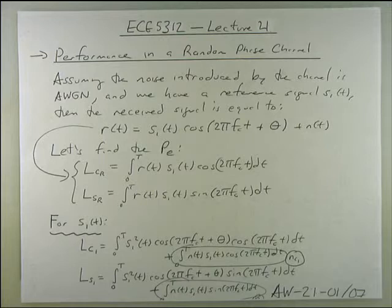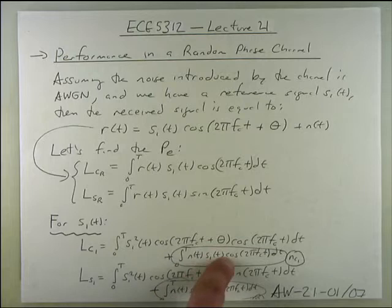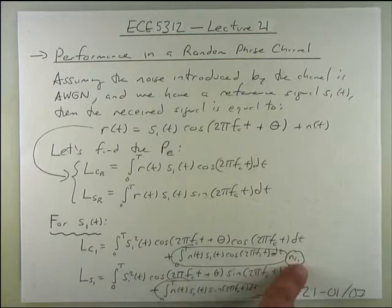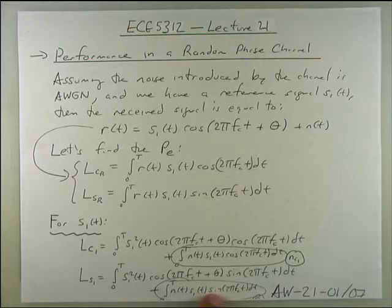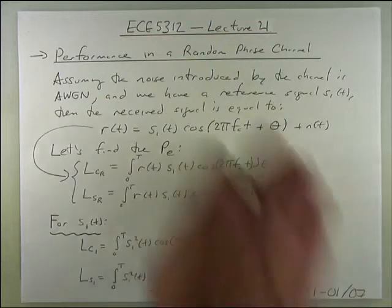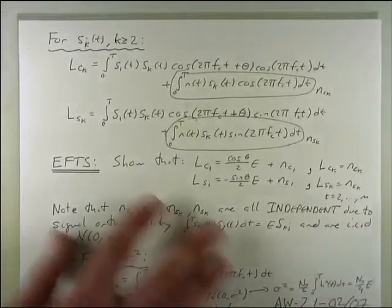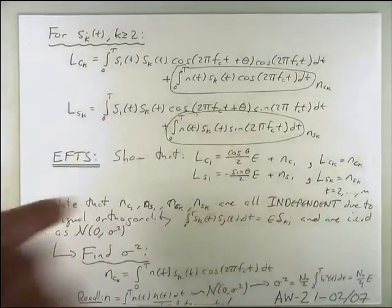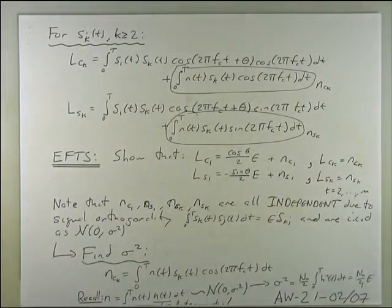The first simplification: this term looks like the correlation of n(t) with s1(t)·cos(2π·fc·t), so we'll call it nc1. And here is noise correlated with s1(t)·sin(2π·fc·t), the quadrature component of s1(t), so we'll call it ns1. We have the case for lc1 and ls1, and then the generic case for k greater than or equal to 2.